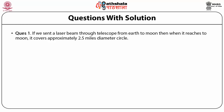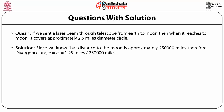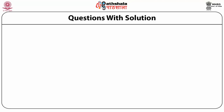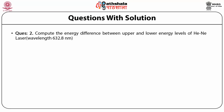If we send a laser beam through a telescope from earth to moon, when it reaches the moon it covers approximately a 2.5 mile diameter circle. The divergence angle φ = 1.25 miles / 250,000 miles = 0.000005 radians, which equals 5×10⁻⁶ radians. To compute the energy difference between upper and lower energy levels of a helium-neon laser: given the wavelength of 632.8 nm, one can calculate the energy as 1240/λ(nm), which comes out to be approximately 2 electron volts.